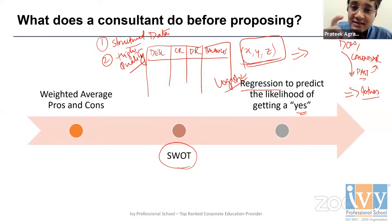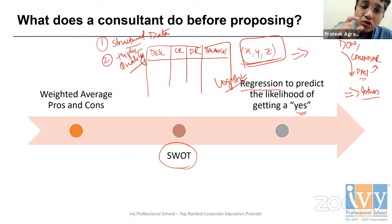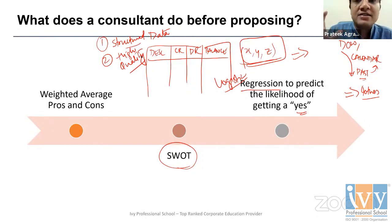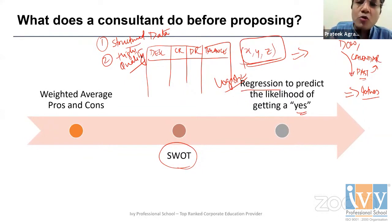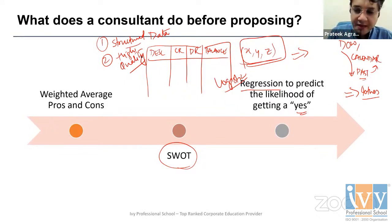Banks and financial institutions have always had the highest quality, verified data about their customers right from the beginning. Since they have high volume of structured data that is also of the highest quality, when they use that data to make decisions, the quality of those decisions is also highest. These are the two main reasons why data science has been prevalent in the BFSI industry for a very long time. Even today, almost one third of all data science job openings come from within the finance industry.